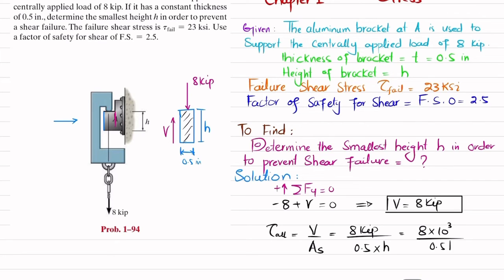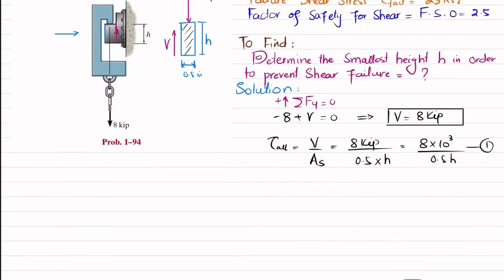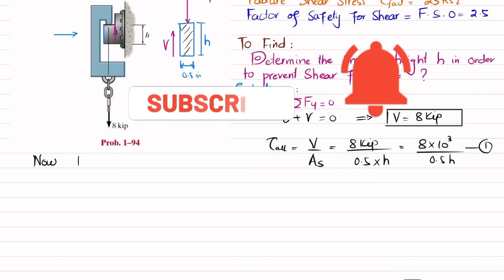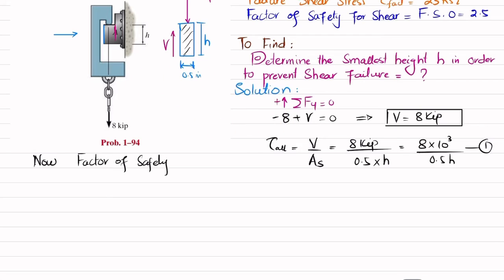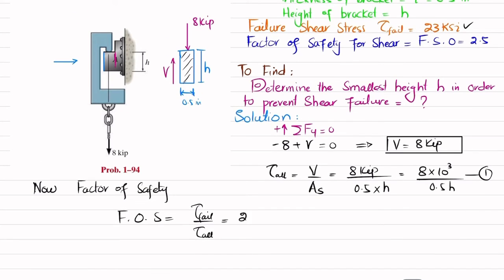Now we know that factor of safety, which is represented as F.O.S., is equal to failure shear stress divided by allowable shear stress. So failure shear stress is given as 23 ksi, so 23 × 10³ divided by allowable, and this factor of safety is given as 2.5. So 2.5 is equal to 23 × 10³ divided by tau allowable.